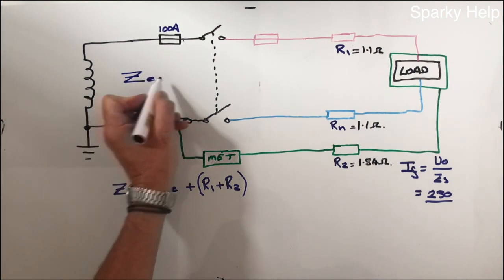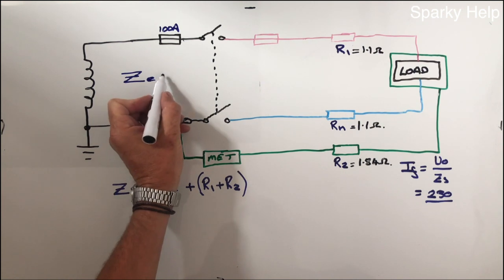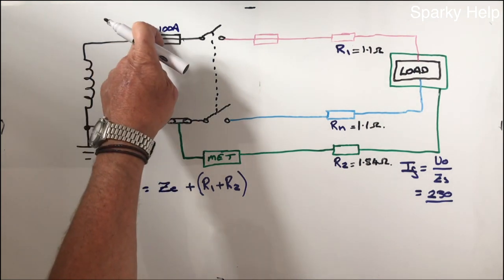Let's give ZE a value, because it's a TNCS, the maximum value would be 0.35 for 100A supply.